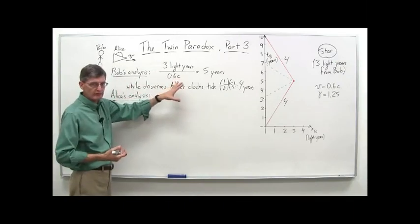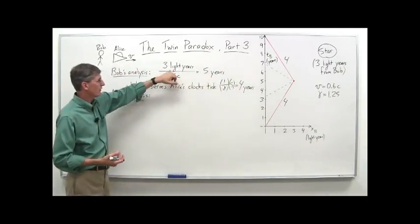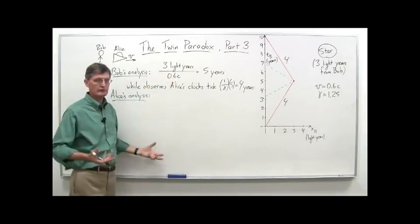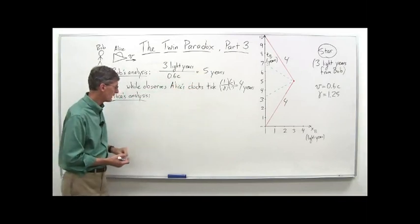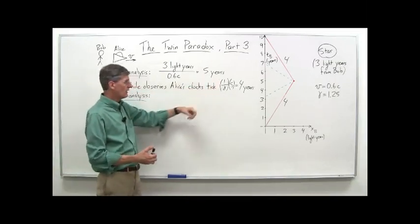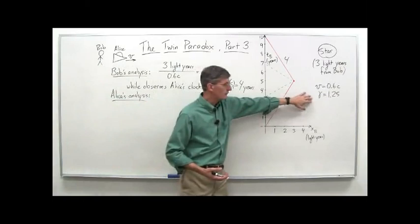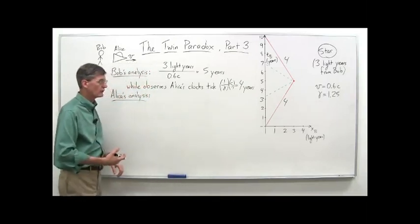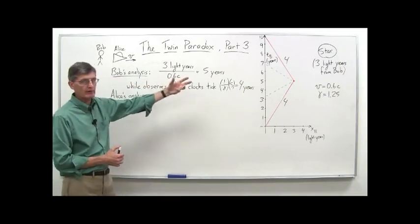Bob's analysis is pretty straightforward. He observes Alice travel to the star at constant velocity. The star, in his frame of reference, is three light years away. She's traveling at 0.6 times the speed of light, and we're using units such that c equals one light year per year. Three divided by 0.6 is five years. He observes Alice's clocks ticking more slowly because she's a moving clock - time dilation. The gamma factor is 1.25 for velocity of 0.6c, so five divided by 1.25 is four years. He will see her clocks tick off four years while his clocks tick off five years for the outbound trip.